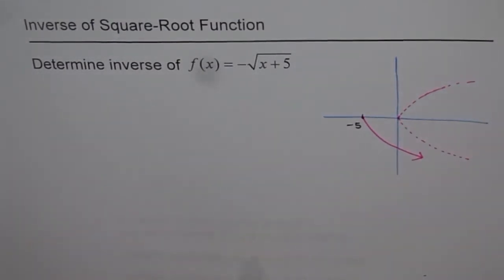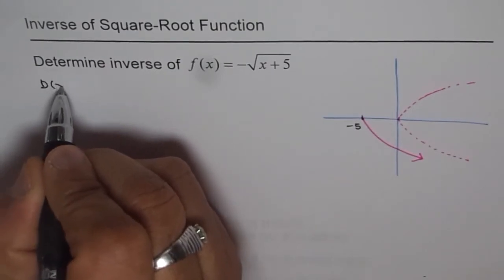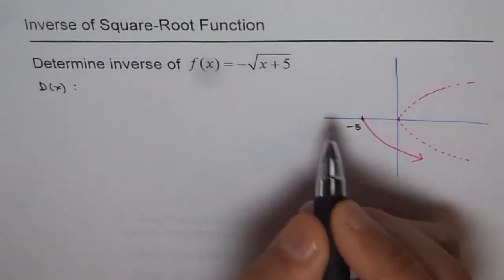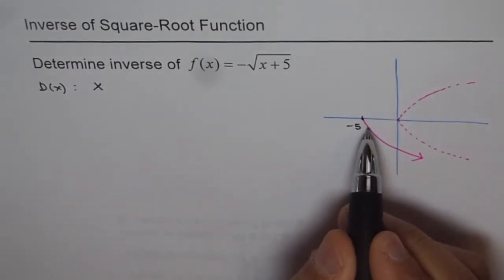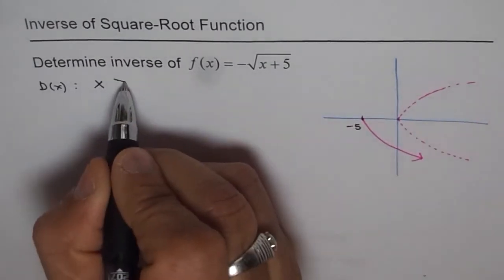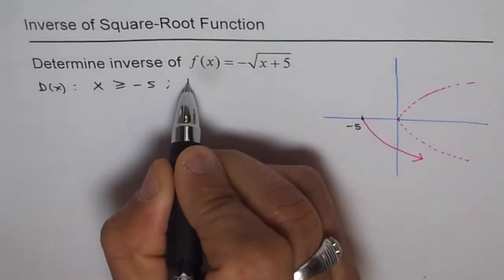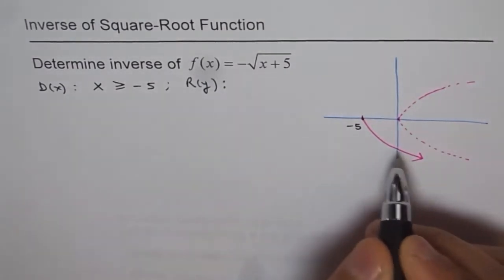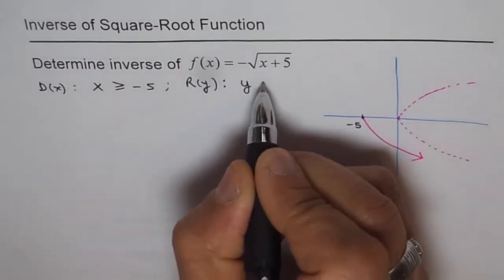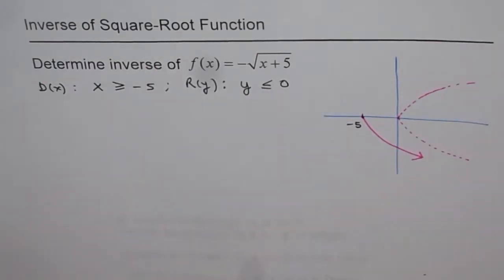As you can see from the graph, the domain of the given function is x ≥ -5, and the range of the given function is y ≤ 0. That is the domain and range for the given function.